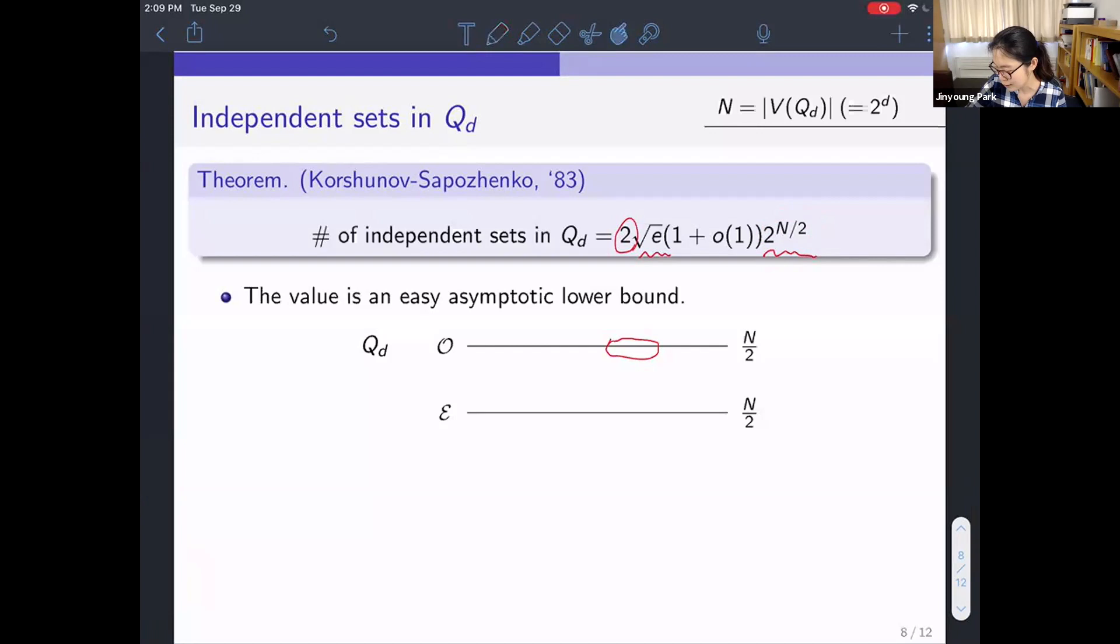For example, let me choose some small number of vertices in one part, so that they do not have a common neighbor. And then we choose some vertices from the other part. Then this is, again, an independent set. And an easy calculation shows that the number of independent sets from this construction is asymptotically square root of (e-1) times 2^(n/2). So the main task of Korshinov and Sapozhenko was to show that the number of independent sets, which are not from this construction, is negligible. So this, which implies this trivial lower bound on the right-hand side is actually the truth.